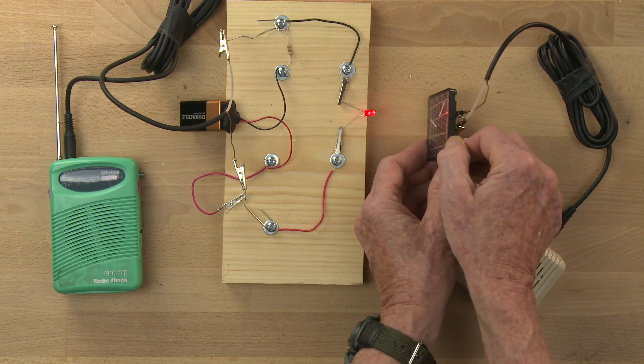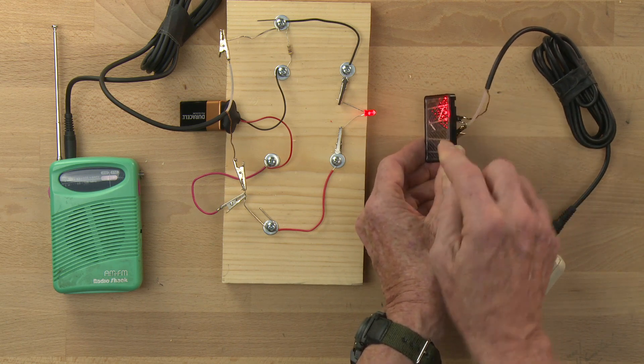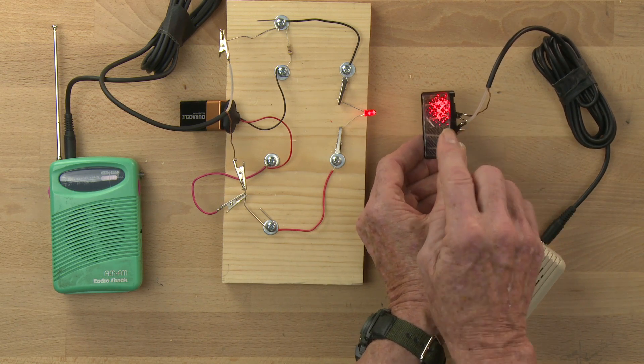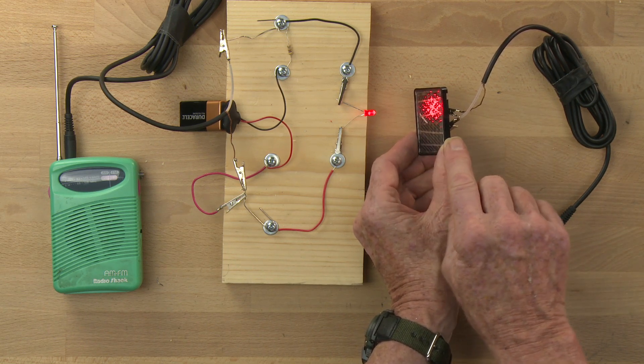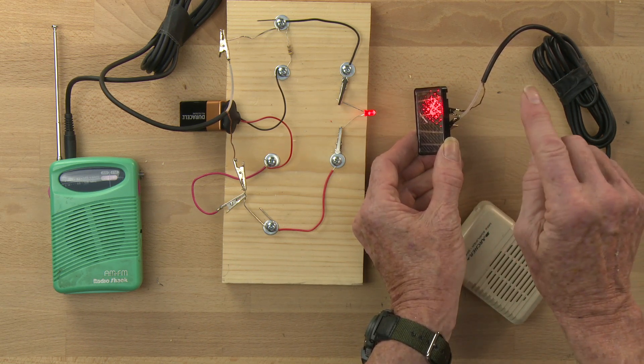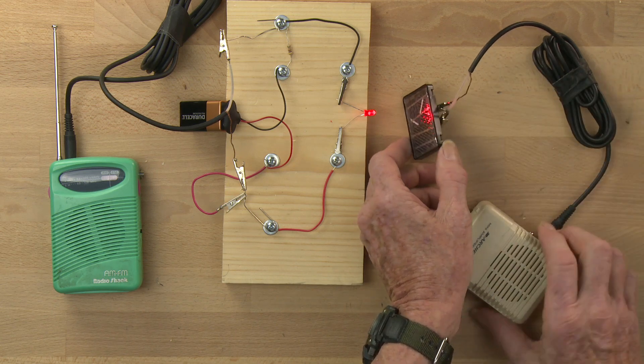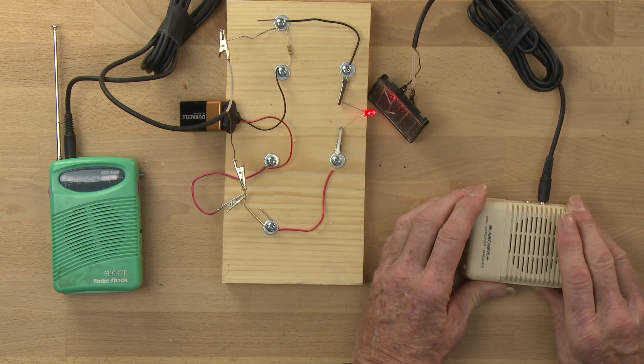Now a solar cell converts light into electric current. And brighter light is more electric current, and dimmer light is less electric current. And that bright, dim, greater current, lesser current signal goes into this amplified speaker.